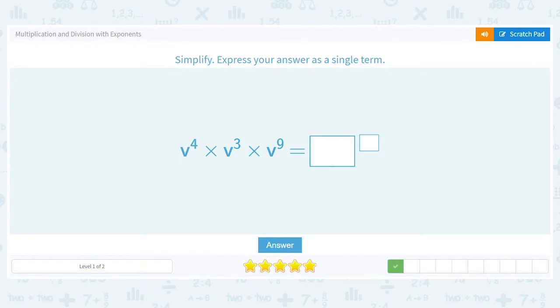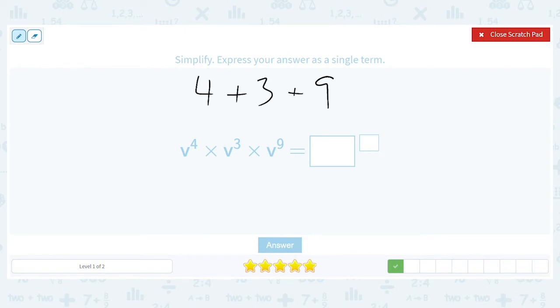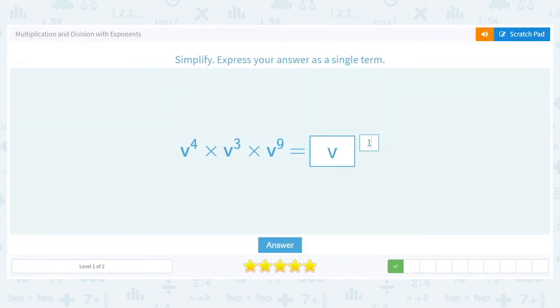Super. Let's try that again. Let's try four plus three plus nine. So that'll give us seven plus nine is sixteen. So we'll end up with v to the sixteenth.